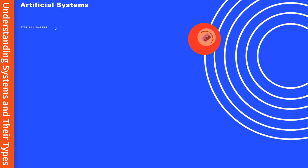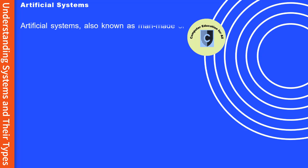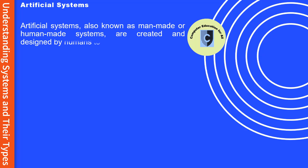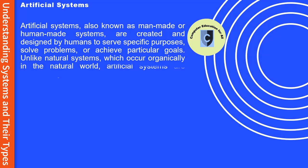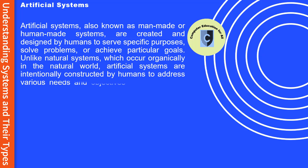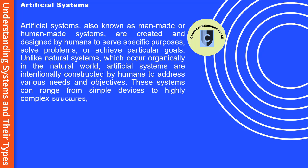Artificial systems, also known as man-made or human-made systems, are created and designed by humans to serve specific purposes, solve problems, or achieve particular goals. Unlike natural systems, which occur organically in the natural world, artificial systems are intentionally constructed by humans to address various needs and objectives. These systems can range from simple devices to highly complex structures, and they exist in numerous domains.